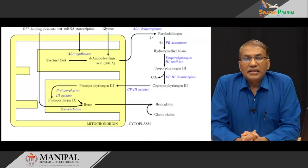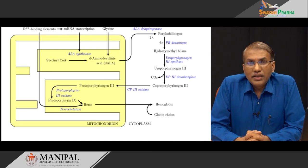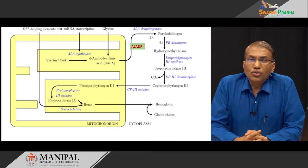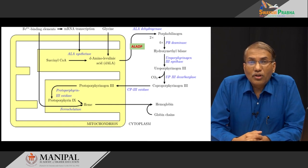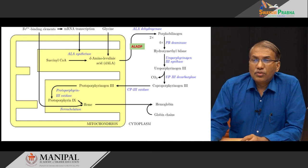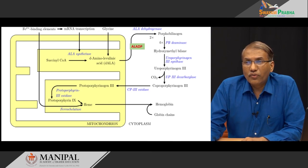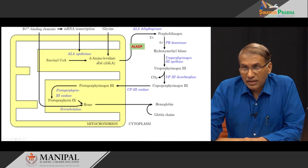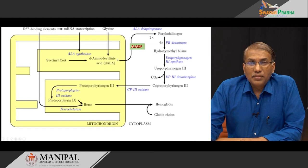Let us try to understand each of these porphyrias by revisiting the heme synthesis pathway. First, let us highlight the acute porphyrias, as they cause severe and disturbing manifestations. ALA dehydratase porphyria involves the enzyme required for conversion of ALA to porphobilinogen. When this enzyme is deficient, ALA accumulates unwantedly in the system, but since ALA is not a porphyrin, there will not be any photosensitivity.